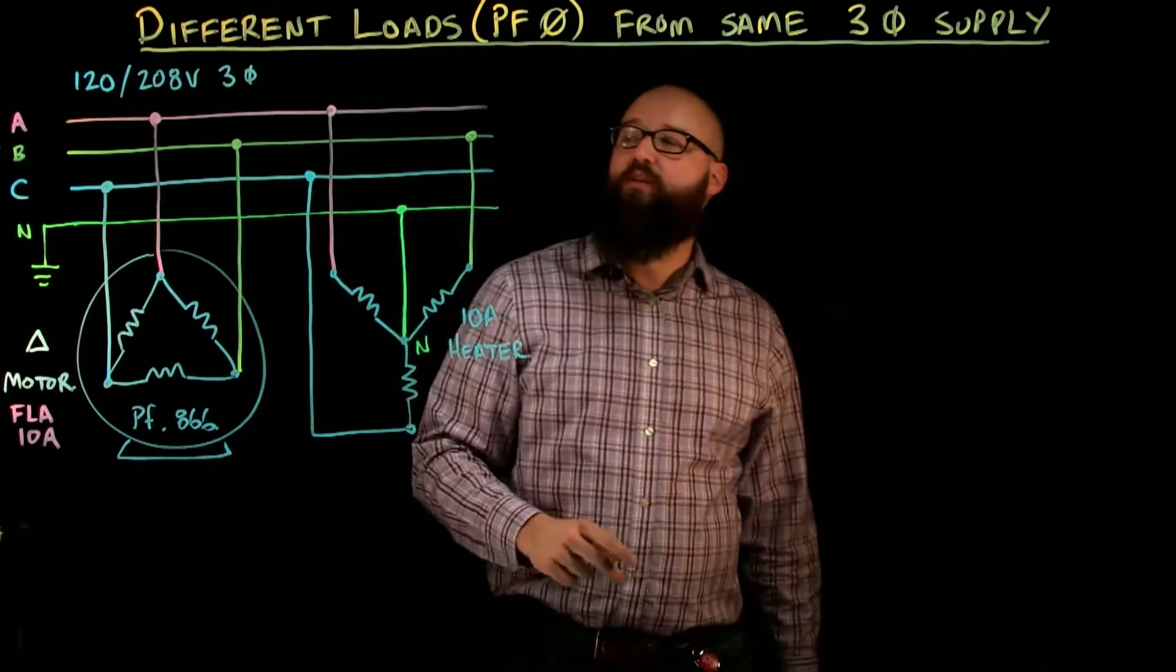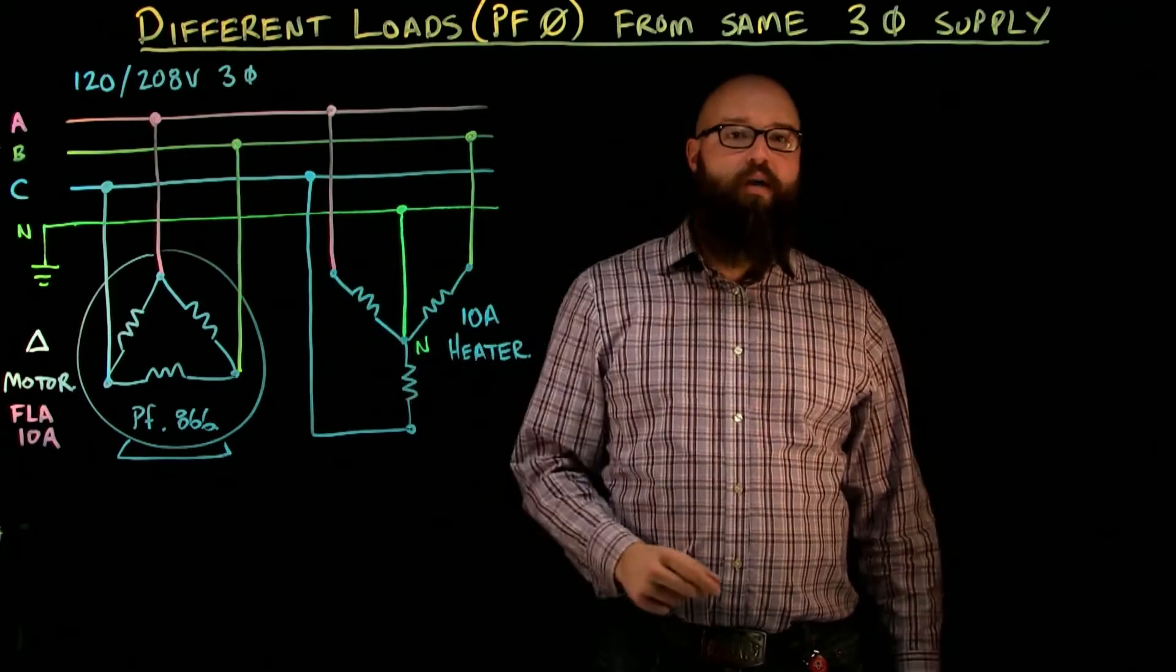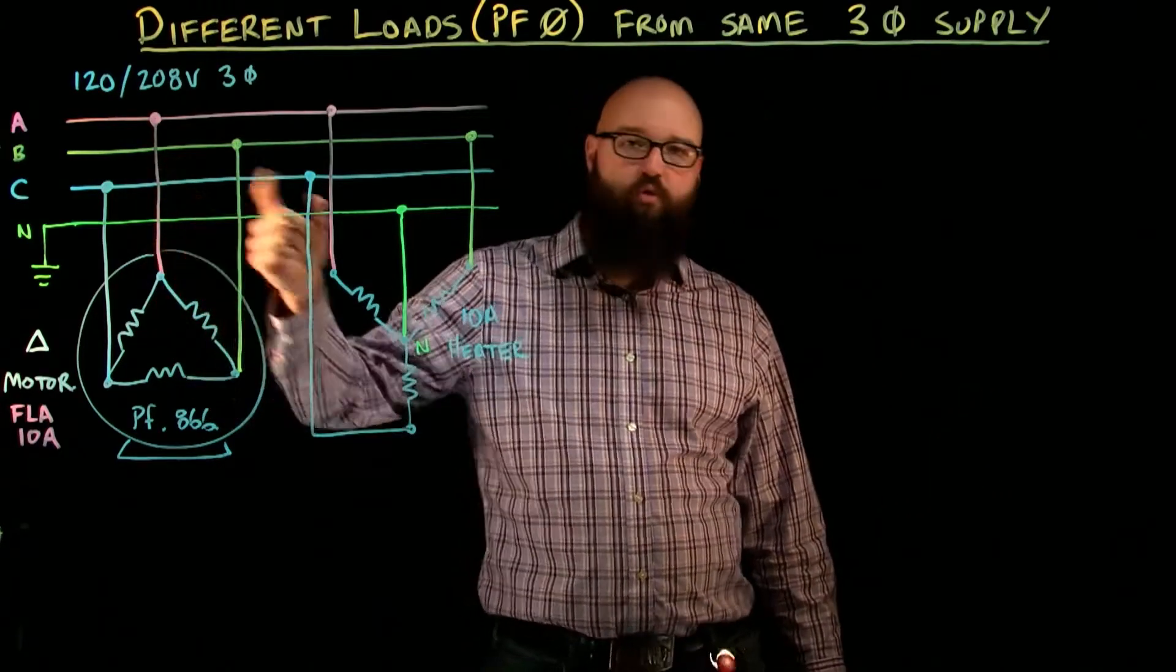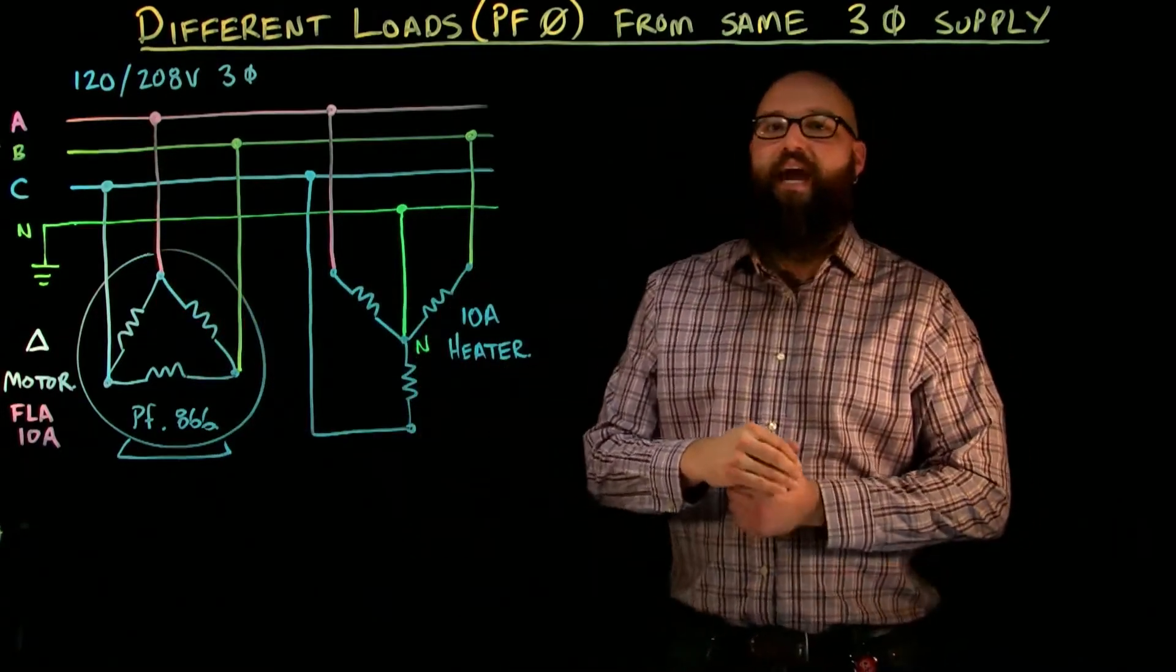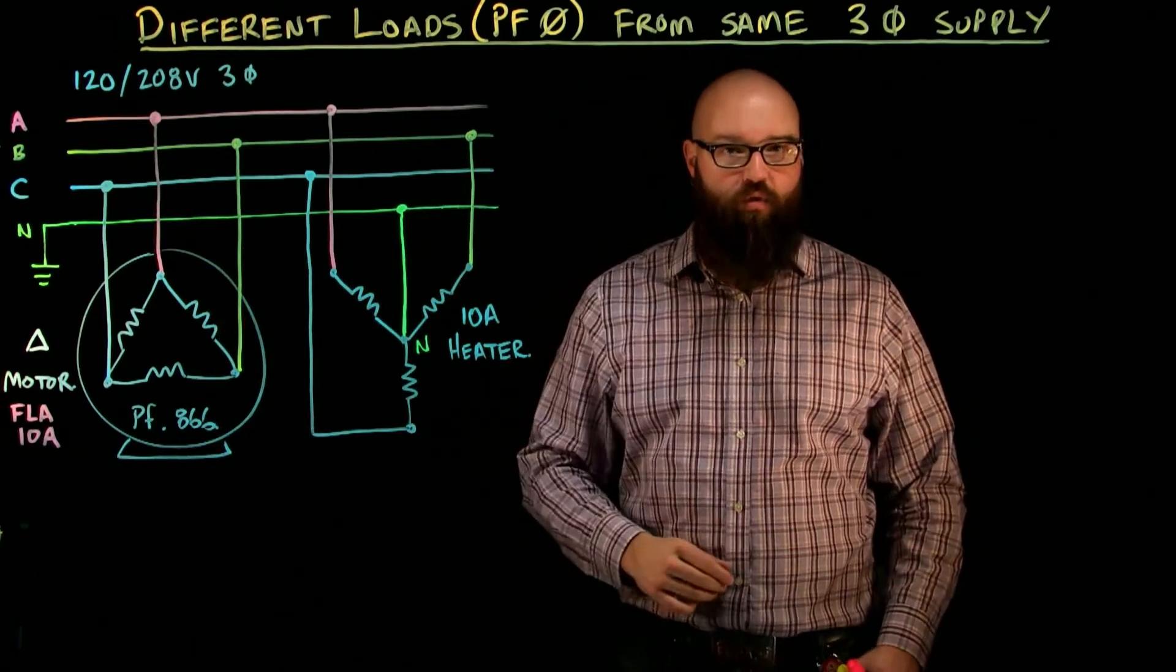We have a 120/208 volt three phase supply which means between lines we have 208 volts and if I were to measure A to neutral, B to neutral, or C to neutral I should see a phase voltage of root 3 smaller or in this case 120 volts.